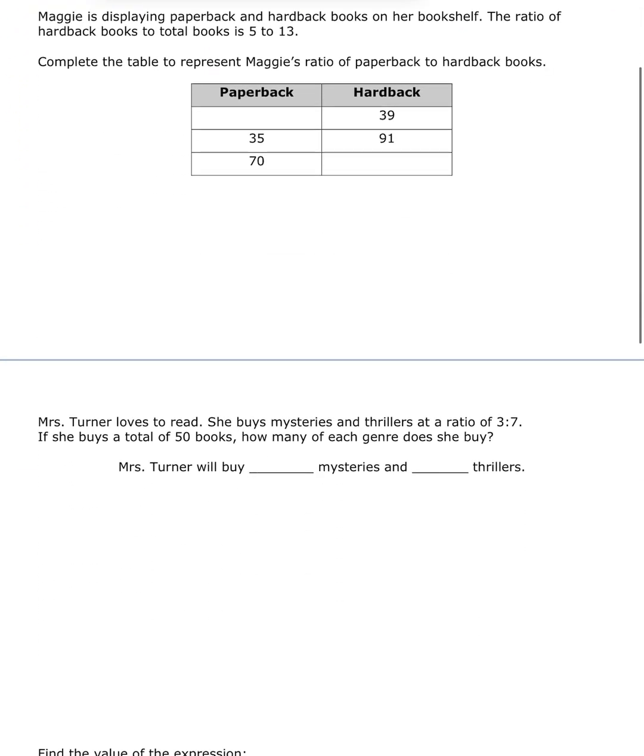Number two, Maggie is displaying paperback and hardback books on her bookshelf. The ratio of hardback books to total books is 5 to 13. So remember, in these problems, labels, labels, labels. That's what matters. So in this problem, I have hardback to total. So I'm going to put hardback H and total T. So hardback was 5, because order matters. Hardback was first, 5 was first, and then total was 13.